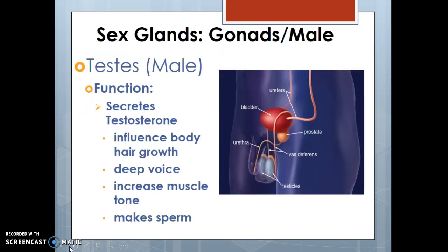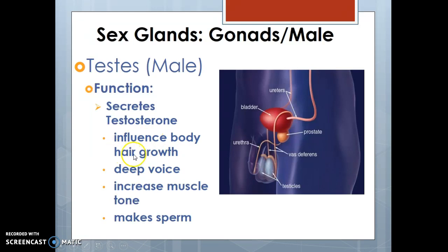The sex glands: men have testes, located underneath the urethra and bladder, which secrete testosterone. Testosterone gives men hair on their face and chest, a deep voice, increased muscle tone, and is also important in making sperm — essentially everything that makes a male a male.